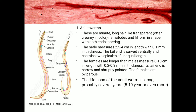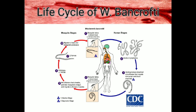The tail end of the female is narrow and abruptly pointed. The female adult worms are known to be ovoviviparous. The lifespan of these adult worms is long — probably 5 to 10 years or even more. This brings us to the life cycle of W. bancrofti.